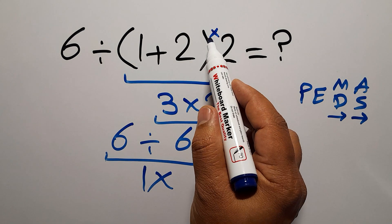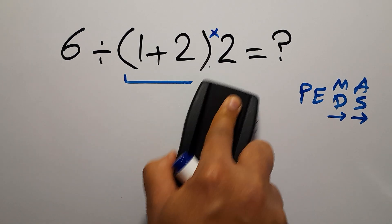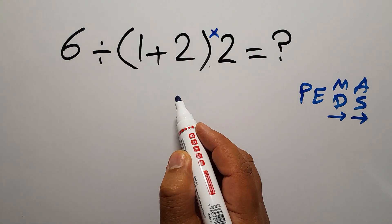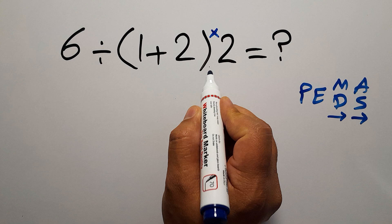And finally we have to do this multiplication. So first, these parentheses: inside these parentheses we have 1 plus 2 which equals 3.